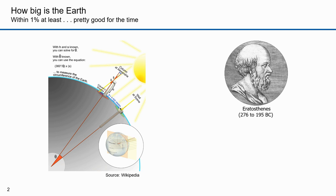Eratosthenes was a Greek mathematician, poet, athlete, geographer, and astronomer. He invented the discipline of geography, including inventing the system of latitude and longitude. He figured out the circumference of the earth with amazing accuracy. He also figured out the reason for the seasons. I'm going to describe how he did both things.